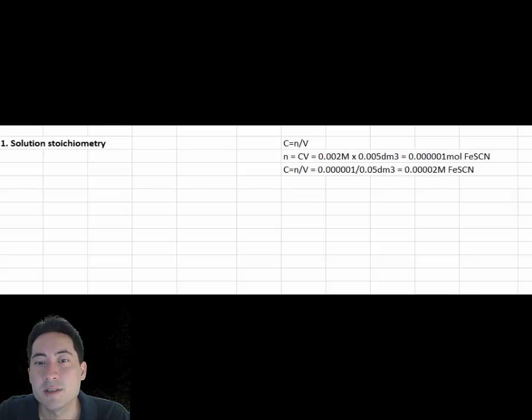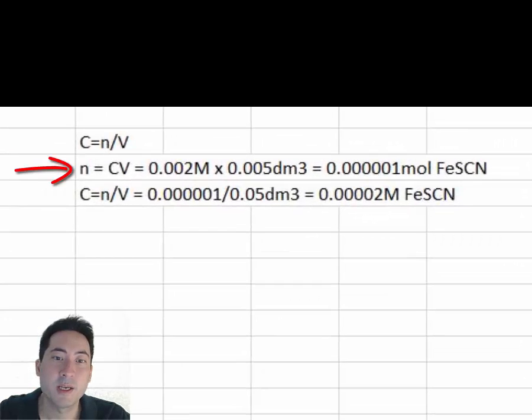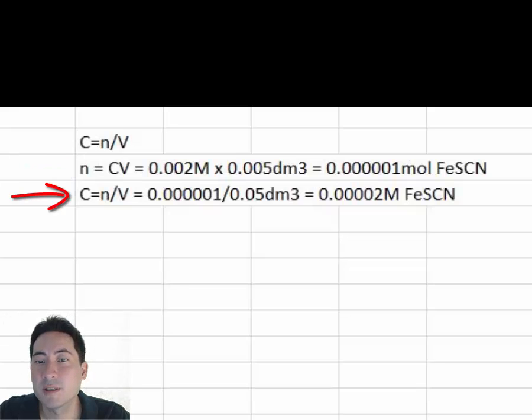To determine the concentrations in this experiment, you need to realize that the substance you add to the final mixture is diluted. So first you need to determine how many moles of substance you added. Only then can you determine concentration by dividing the number of moles added by the total volume.